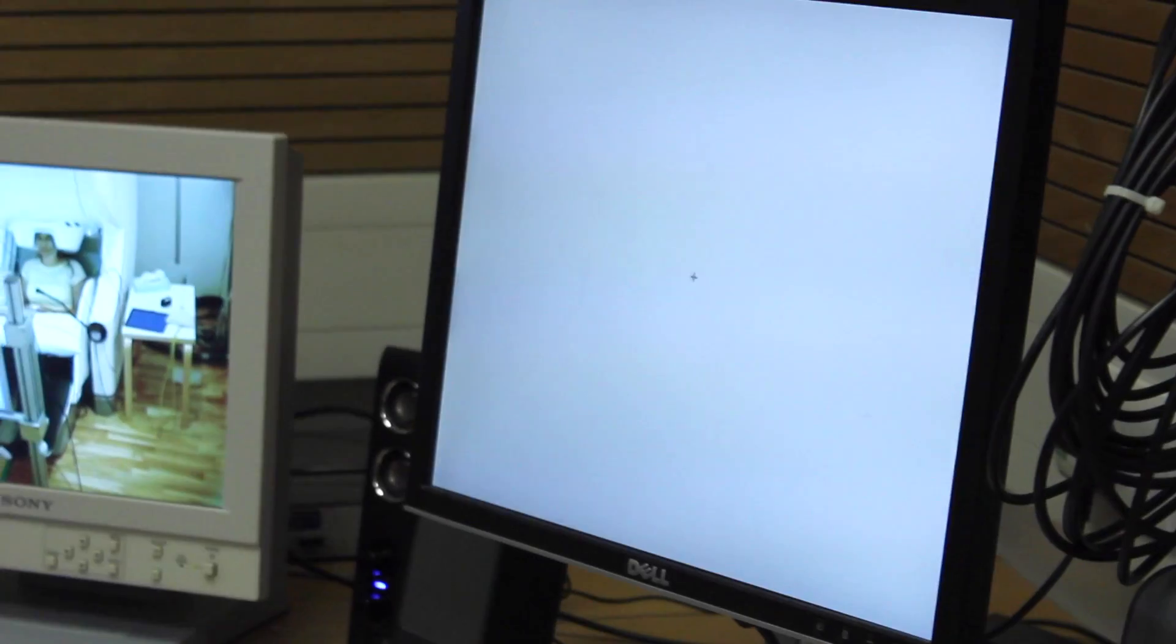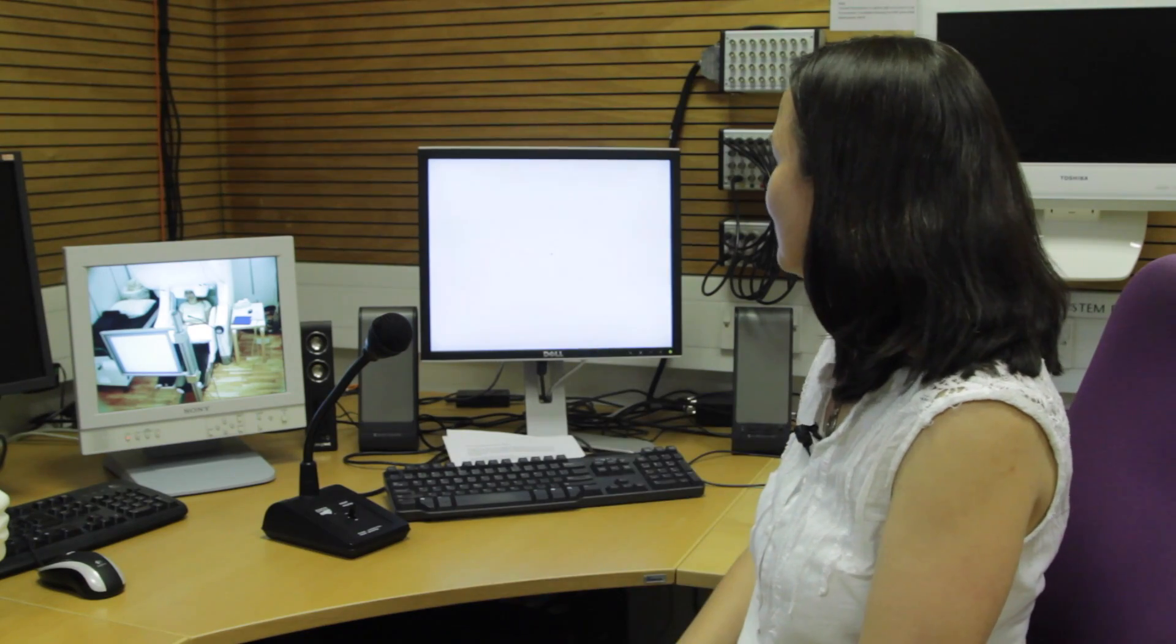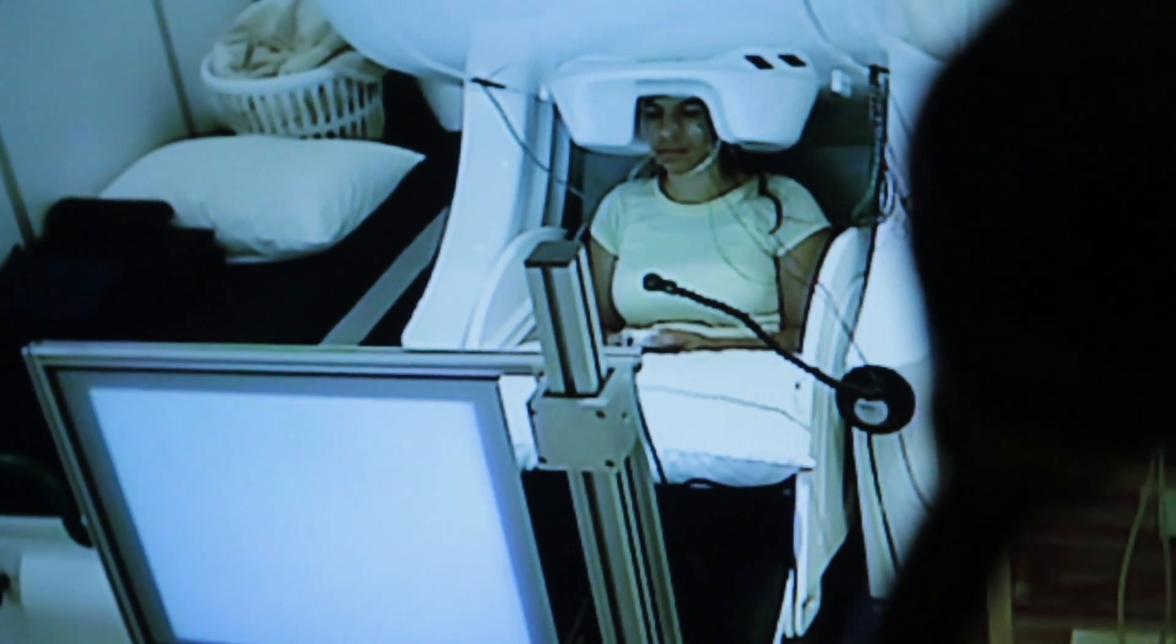On the screen you can see the action inhibition task we're using. It's a very classic go, no-go task. There's a series of O's which set up a pre-potent response which needs to be inhibited during a no-go trial, in this case when a letter X appears.